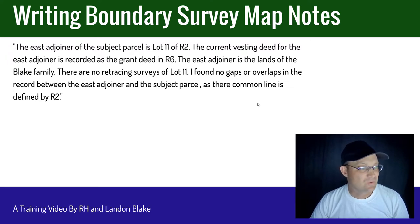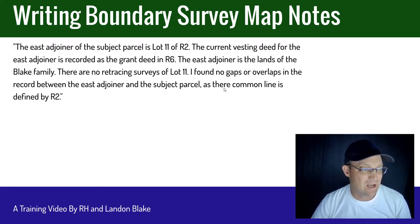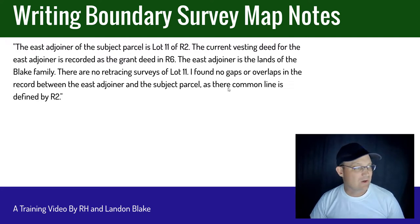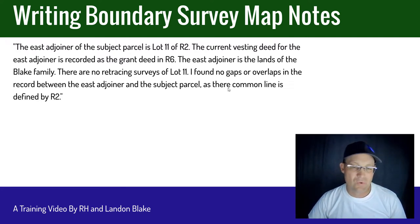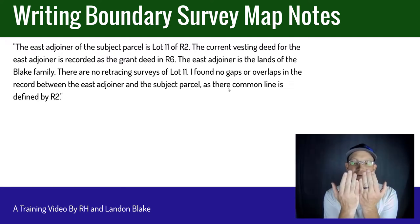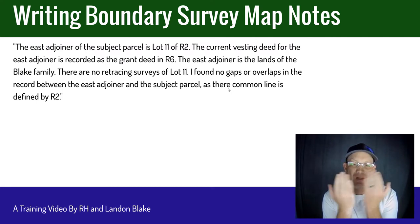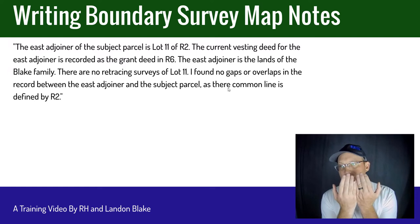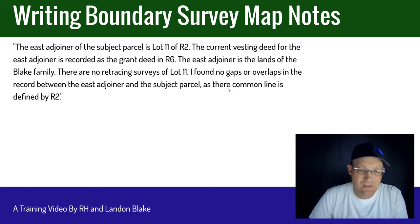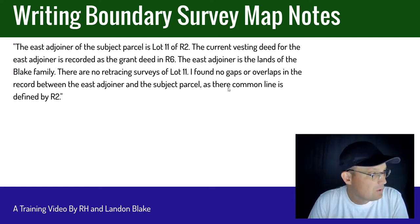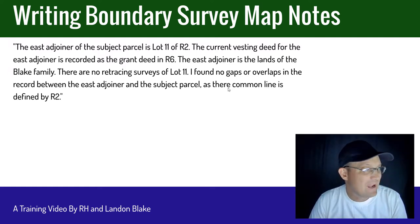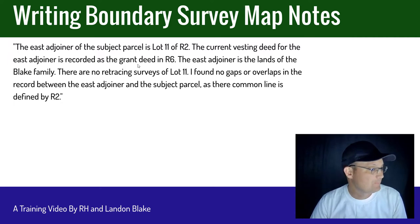Don't do like me and use the wrong type of 'there' — that should be T-H-E-I-R, their common line. What we have in this note is two lots on the same subdivision map that are adjoining. By definition there is no gap or overlap because we're dealing with simultaneously created parcels. And that's the adjoiner note example.